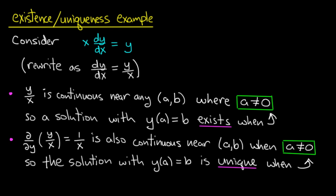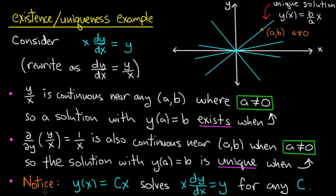It's interesting to get a concrete understanding of what's going on by actually solving this equation. It's easy to check that y(x) equals cx solves x dy/dx equals y for any value of c. I've sketched a few of these solutions — they are lines of slope c passing through the origin. If I go to a point (a, b) with a not equal to 0, I choose y(x) equals (b/a)x, and that will be the unique solution passing through that point.